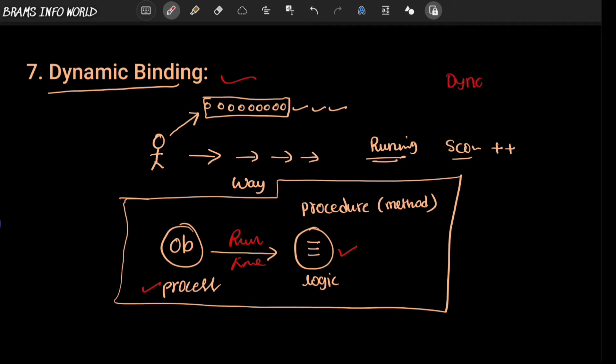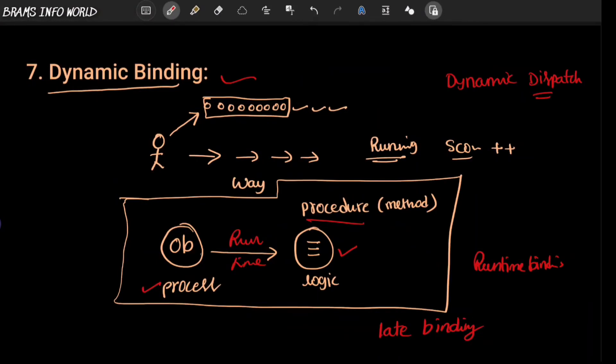We will talk in detail about dynamic method dispatch. This is the concept of dynamic binding. Dynamic binding is also called late binding or runtime binding - linking the procedure at a particular process or particular sequence of the code is nothing but dynamic binding.